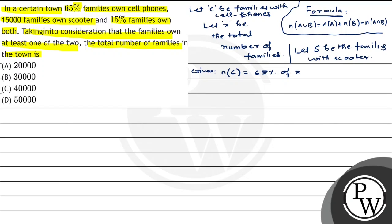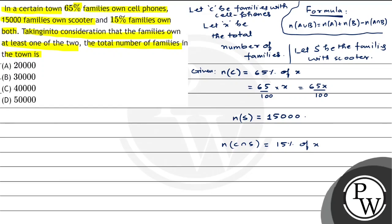N of C, the number of families owning a cell phone, is 65% of X, which is 65X by 100. N of S, the number of families owning a scooter, is 15,000. N of C intersection S, the number of families owning both a cell phone and a scooter, is 15% of X, which is 15X by 100.